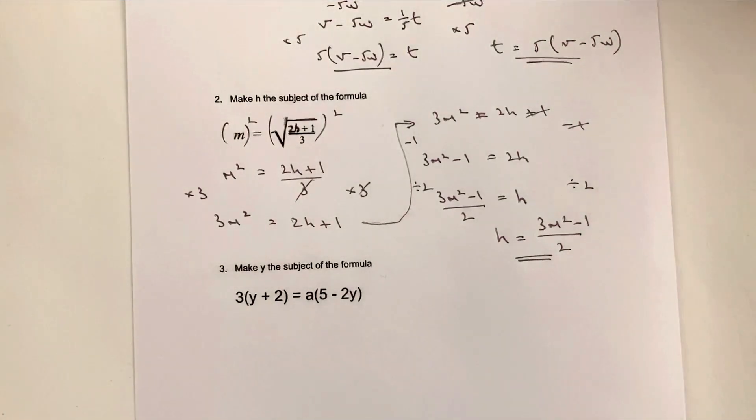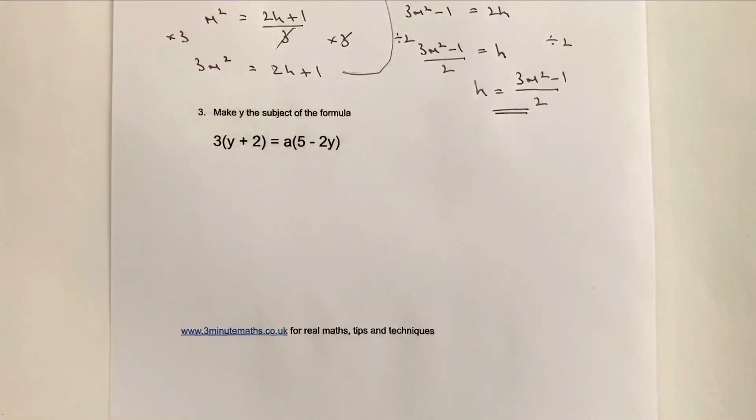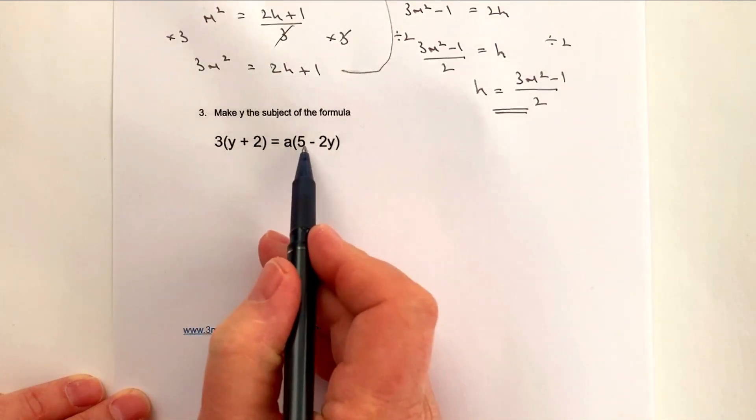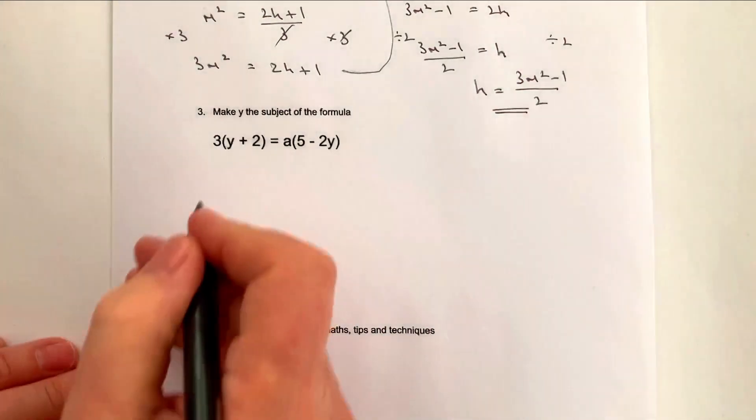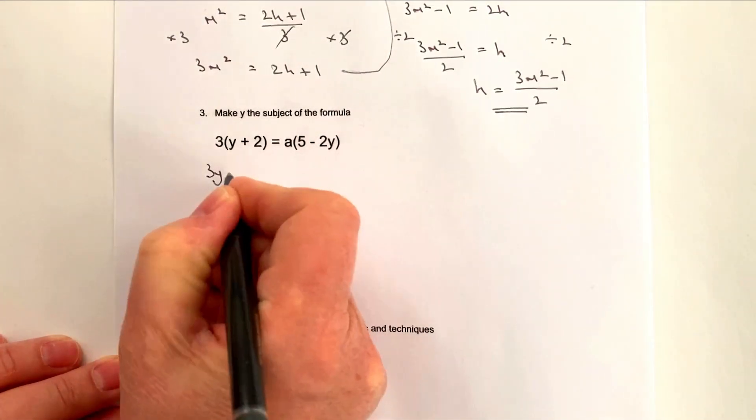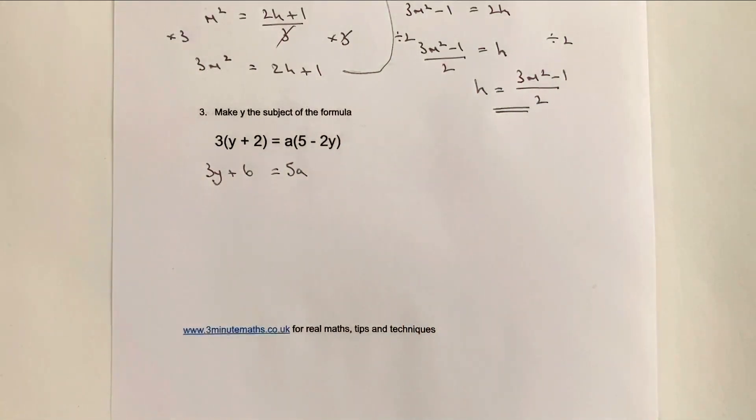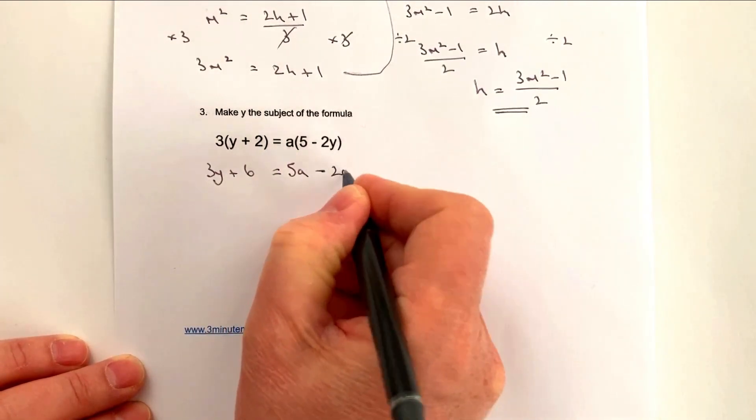So let's move on to question number 3. Now question number 3 on the surface of it doesn't look too bad but actually we're going to need to be able to factorize or at least certainly to recognize that we've got to factorize. Because if we're trying to make y the subject we've got a y here but then we're going to end up with 2a y when we expand that bracket. So let's just do that and see what we end up with. So on the left hand side we're going to get 3y plus 6 and on the right hand side I'm going to write that as 5a rather than a 5. It just sounds a little bit better to write it as 5a but it means exactly the same. And then I've got a times minus 2y well that's minus 2a y.